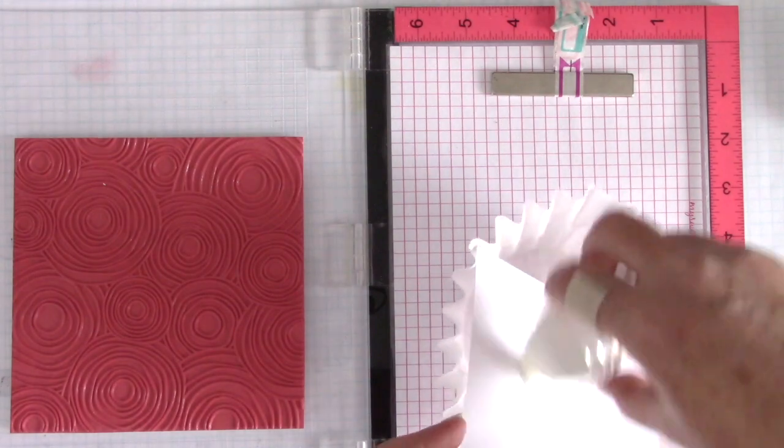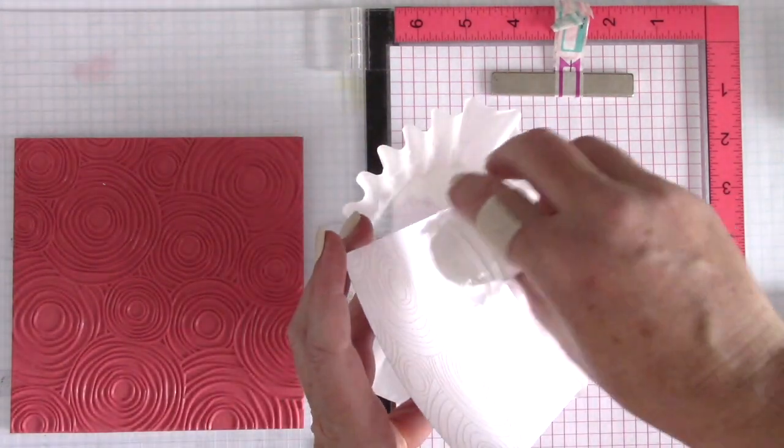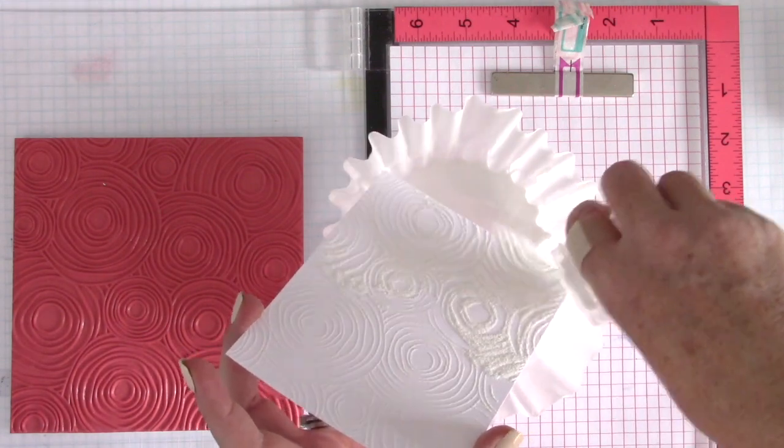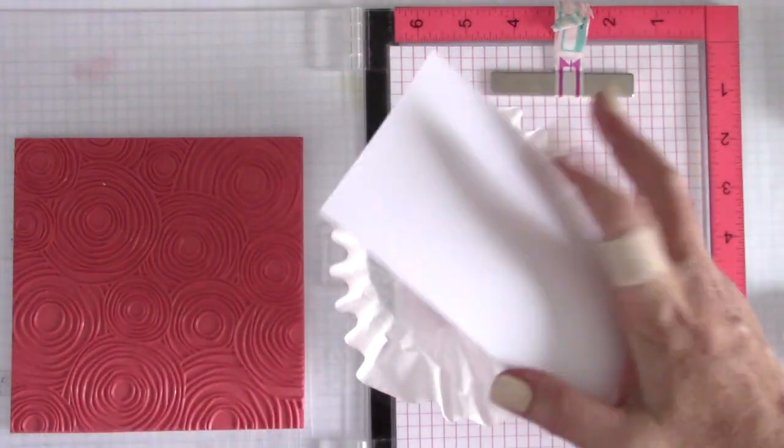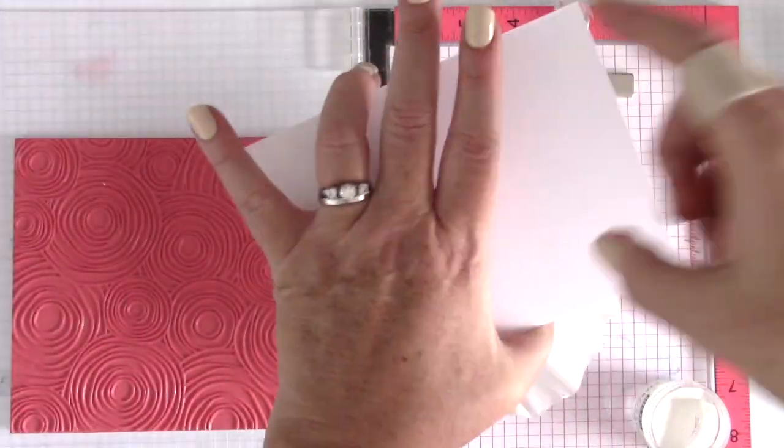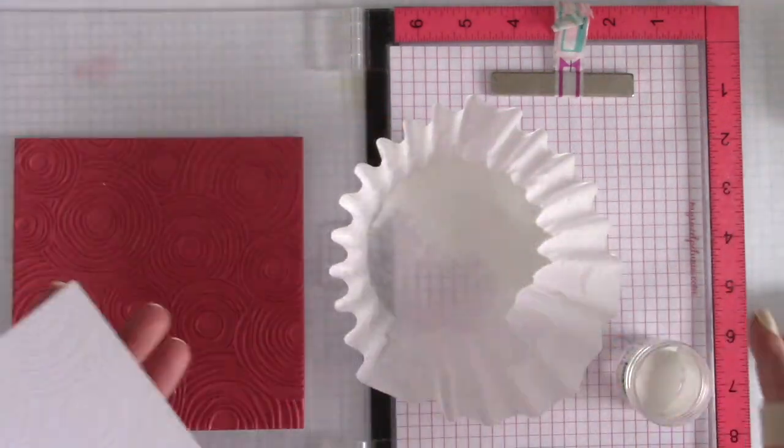Next I am going to take some Hero Arts White Embossing Powder and I am going to pour it all over on top. You can start to see a bit of the design come through as the powder sticks to the Versamark ink. I am just going to tap off the background, any excess powder, and then my image is ready to heat emboss.